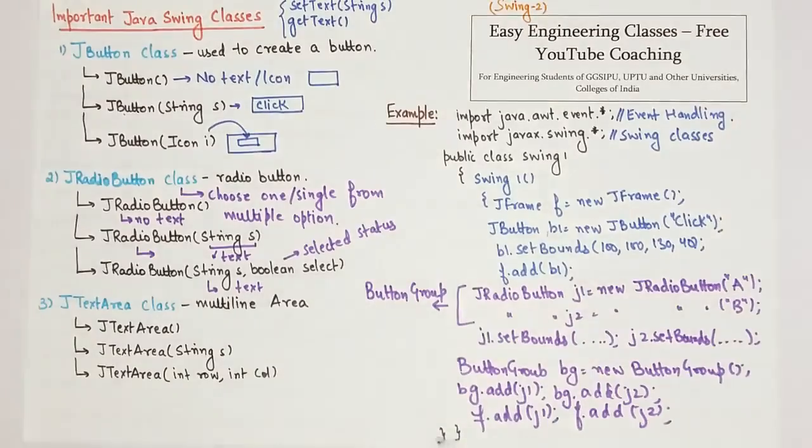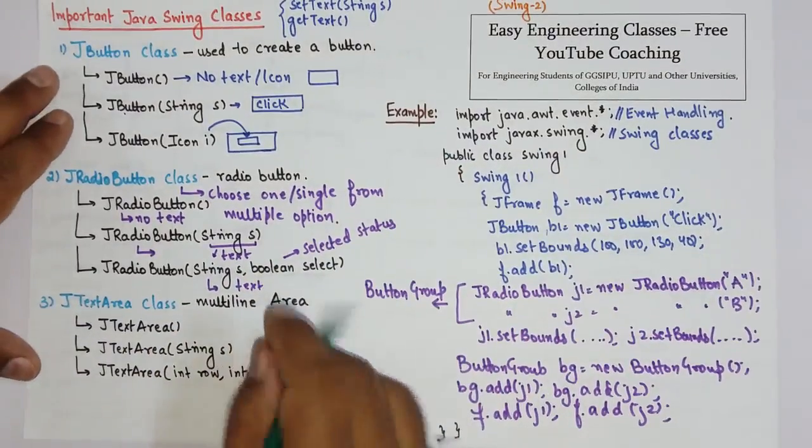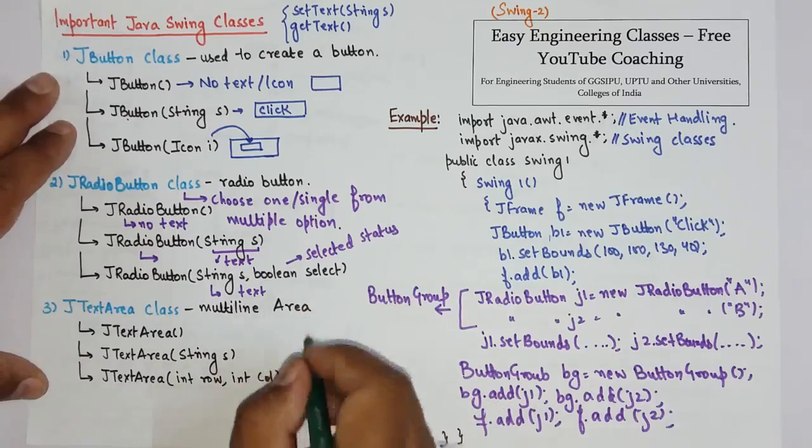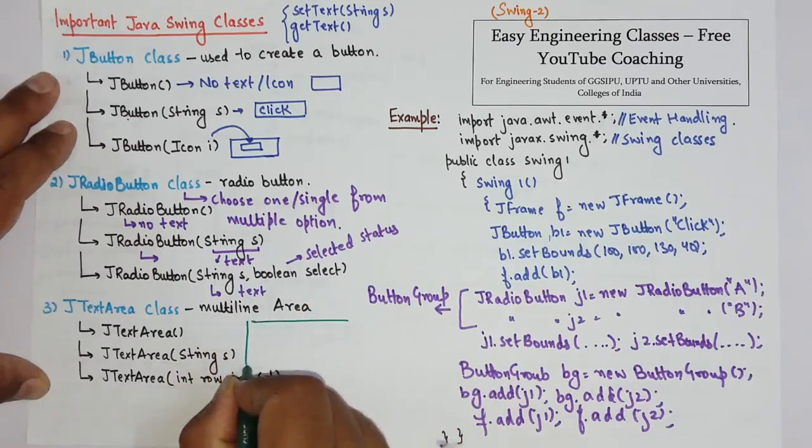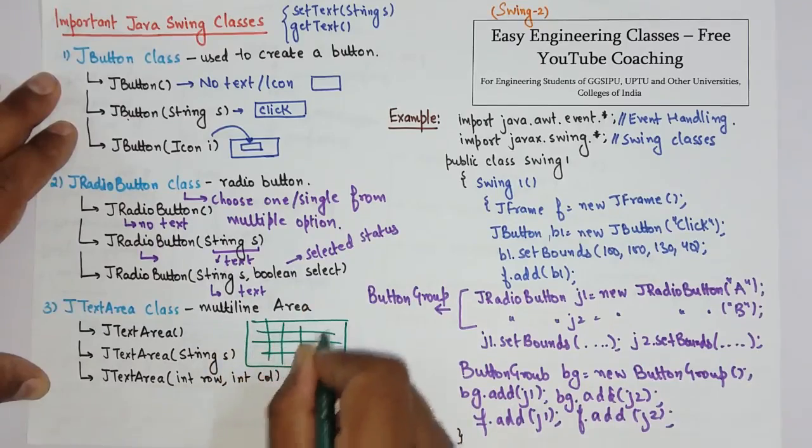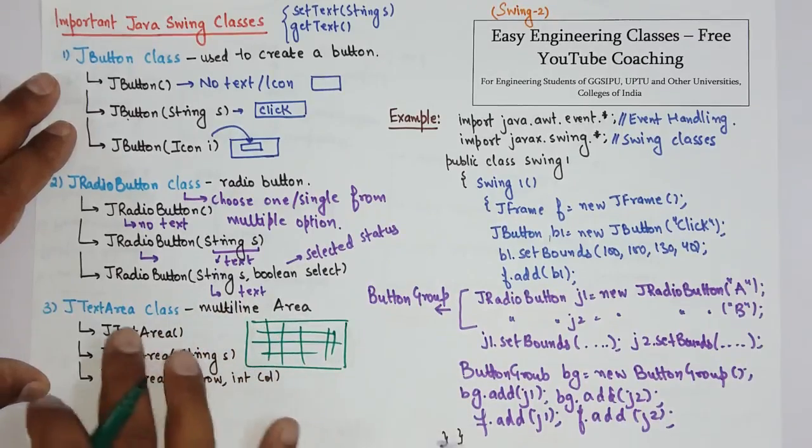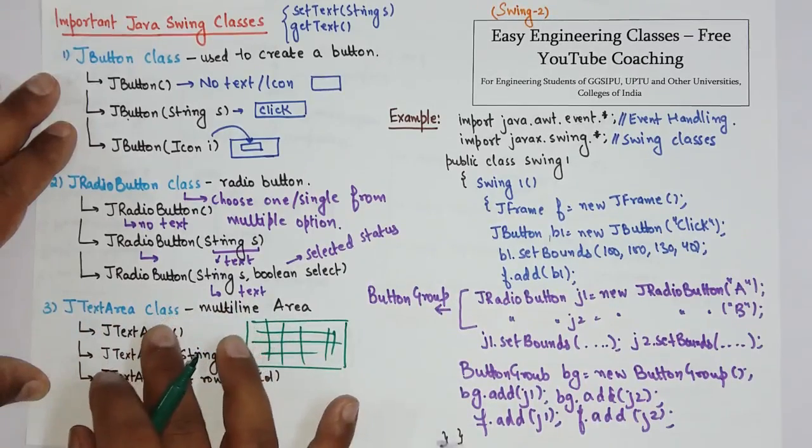So this is how you can create radio buttons in Swings. Now let's see another class which is JTextArea class. JTextArea class is used to create a multi-line area. Just like if you want to create an area where there are some number of rows and columns, so you can use JTextArea.